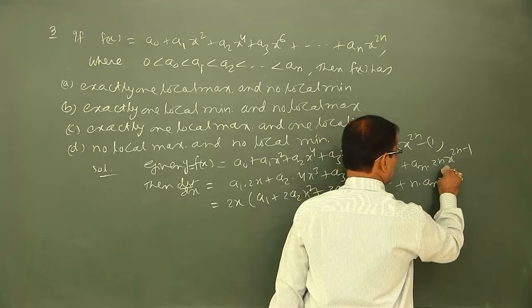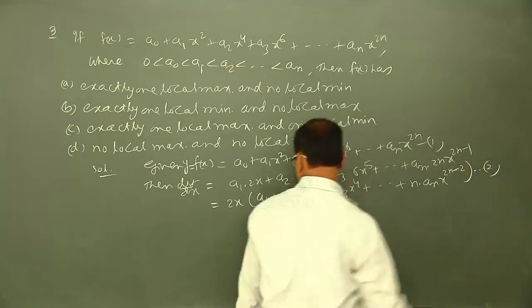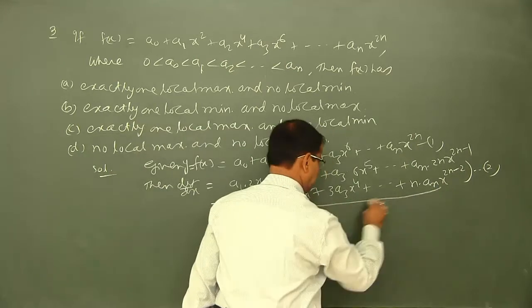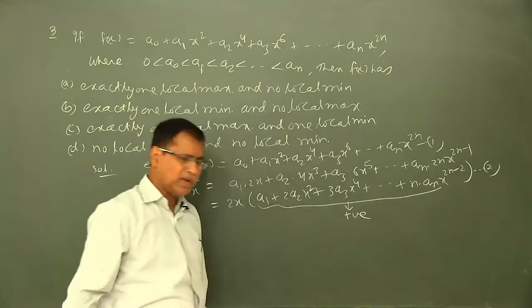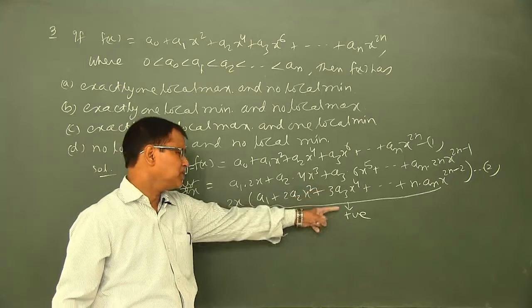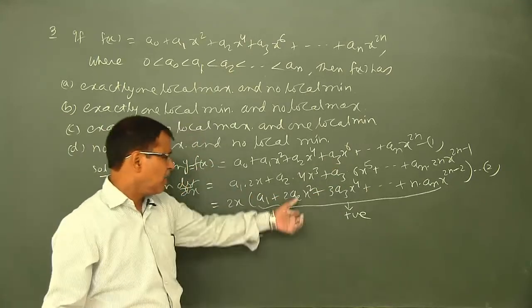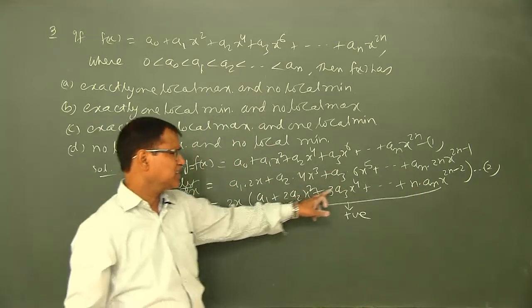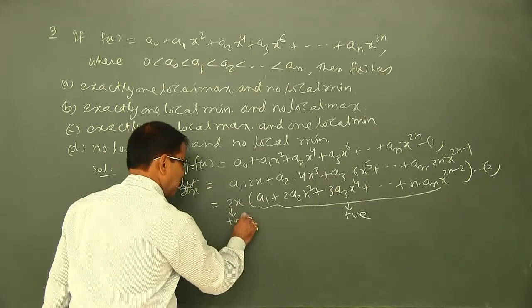Taking 2x common, f'(x) = 2x·[a₁ + a₂·2x² + ... + aₙ·x^(2n-2)]. Now this expression inside the bracket is positive — why? Because a₁, a₂, a₃, ..., aₙ are all positive, and only even powers of x appear, so the bracket is always positive. And 2 is also positive.